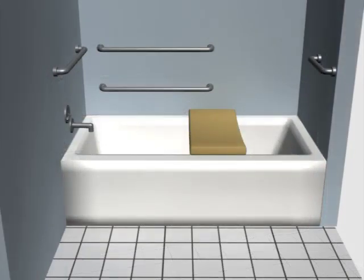Removable seats must attach securely when in place so they do not move or shift during use. Grab bars on the back and side walls provide support in transferring to and using seats.